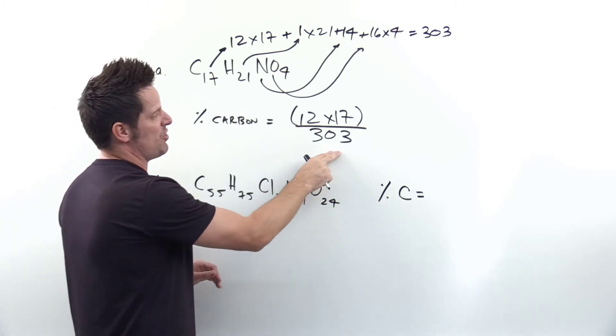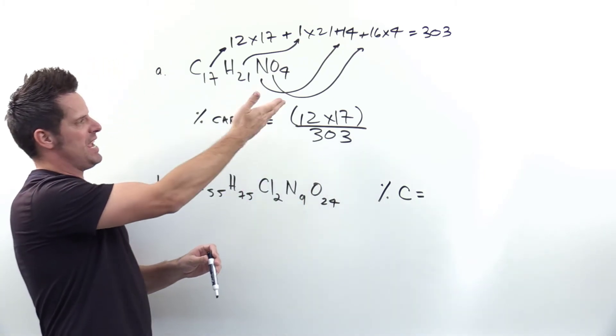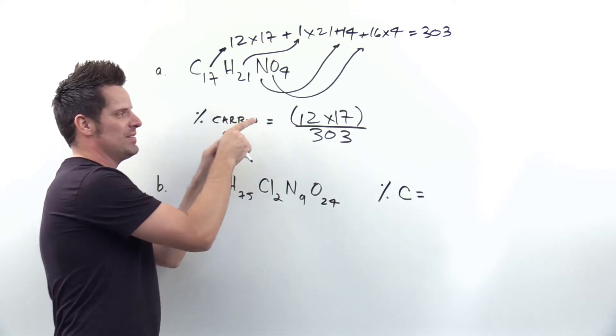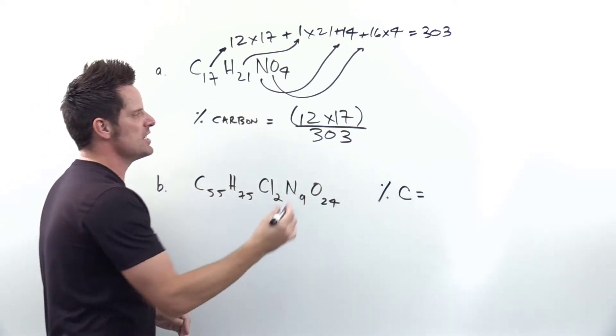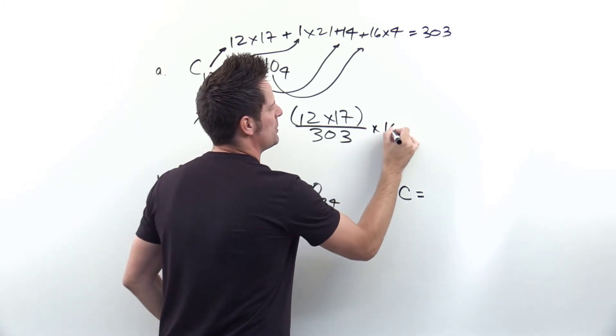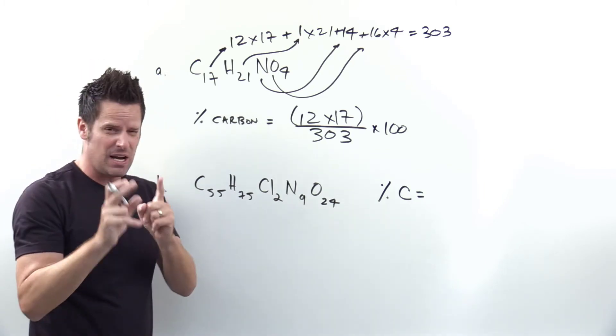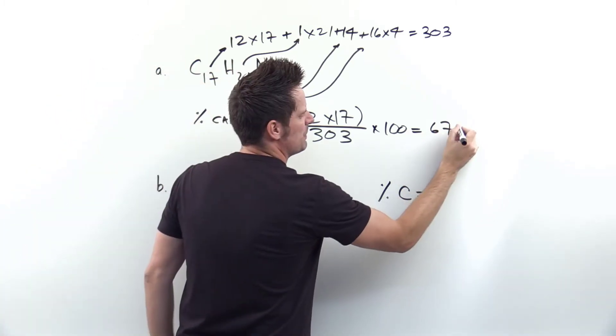If I've got total mass of 303 of all of the atoms including carbon, but the amount that's just carbon is 12 times 17. I put 12 times 17 in the numerator, put the 303 in the denominator, and then multiply the whole shebang by 100 to get the overall percent that's carbon. And that's what we're talking about here. So that comes out to be 67 percent.